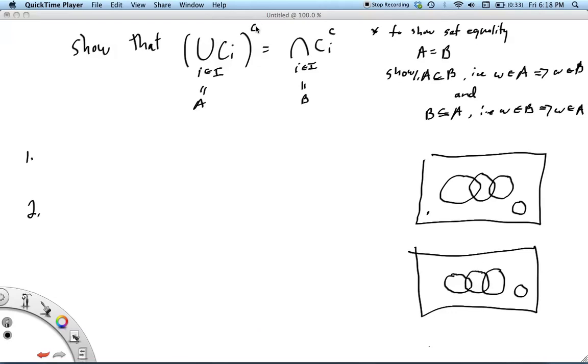is that the complement of the union of sets is equal to the intersection of the complement of those sets. And so instead of having to keep writing this out, I'm just calling this set A and this set B.